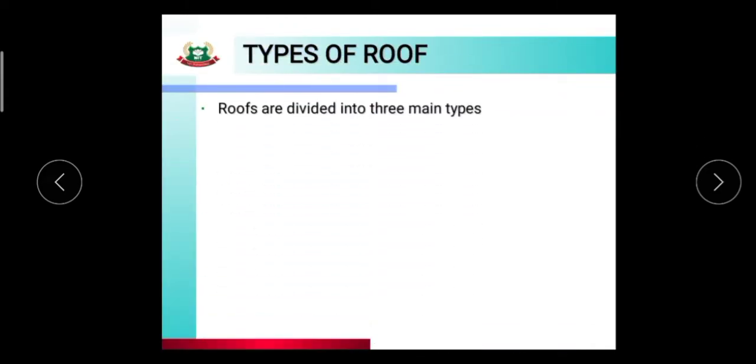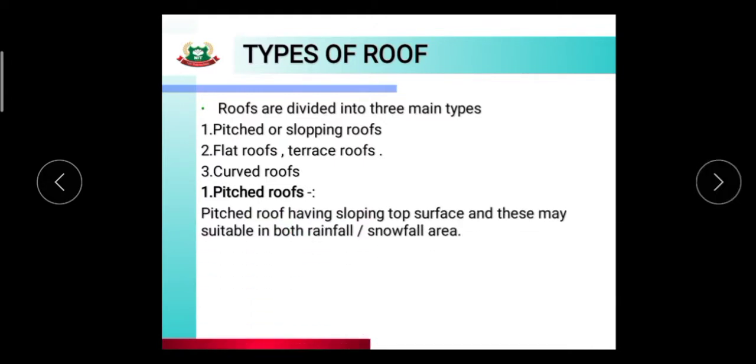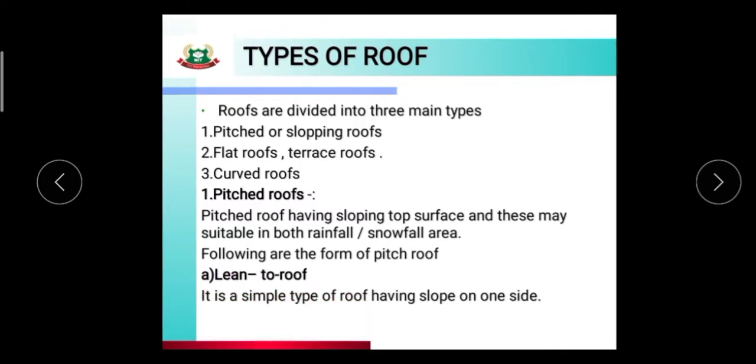Types of roof. Roofs are divided into three main types: first, pitched and sloping roofs; second, flat roofs or terrace roofs; third, curved roofs. Pitch roofs have a sloping top surface and are suitable in both rainfall and snowfall areas. Following are the forms of the pitch roof: first, lean-to roof, which is a simple type of roof having a slope on one side.